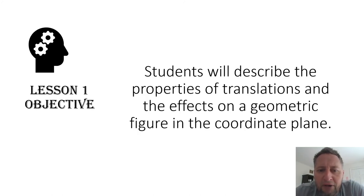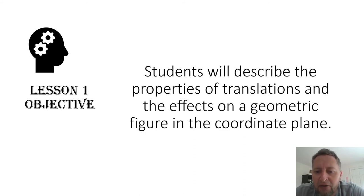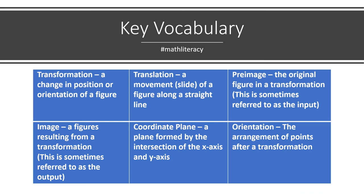Our Lesson 1 objective is that students will describe the properties of translations and the effects on a geometric figure in the coordinate plane. Some key vocabulary here using our hashtag math literacy. First key vocabulary word is a transformation — a change in position or orientation of a figure. So I'm thinking about change in position, meaning the shape has to move, and then there's this word orientation, which we'll talk about in a couple of seconds.